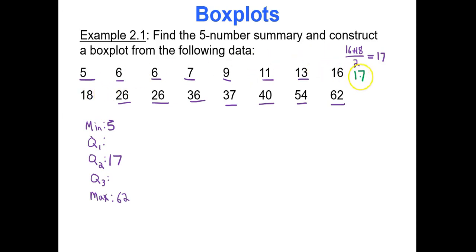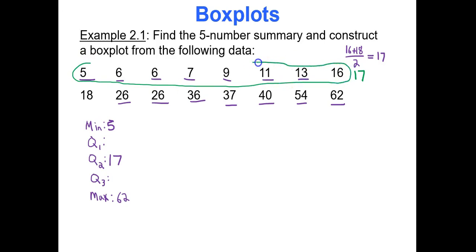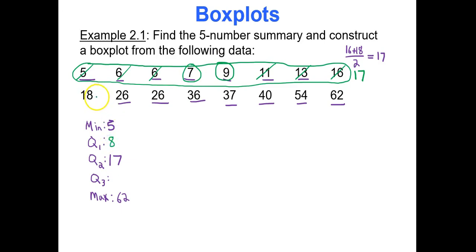Below 17 is 50% of the data, and above 17 is the other 50%. Looking at the bottom 50% — the values below the median — and crossing out from each side, we're left with two values in the middle: 7 and 9. Averaging them gives Q1 = 8. For Q3, look at all values above the median and cross out from each side, leaving 36 and 37, so Q3 = 36.5. That is the five number summary.